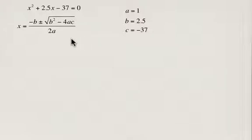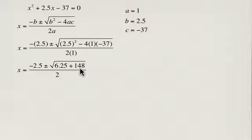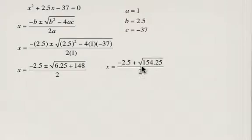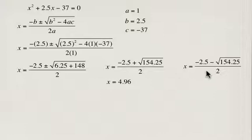Now we're going to substitute into the quadratic formula. I'm including the intermediate simplification steps in case you need to check a calculator error. What you end up with is x equals 4.96 — I'll explain why I've rounded to two decimal places in just a second — and x equals negative 7.46.